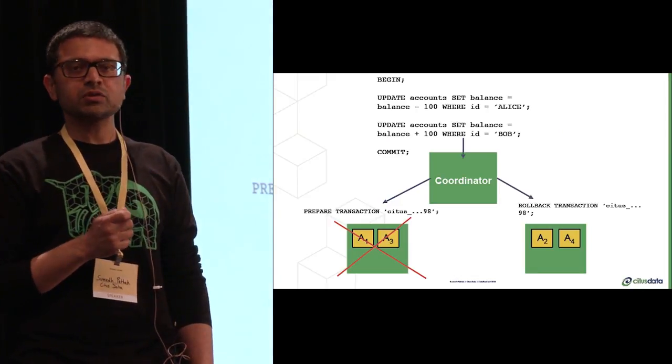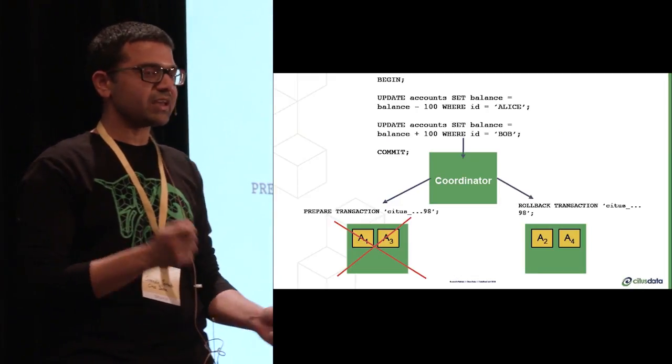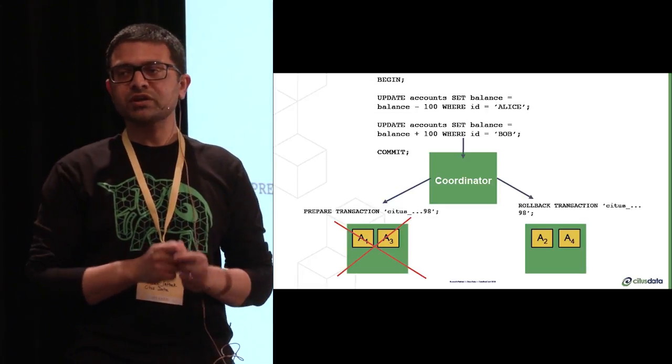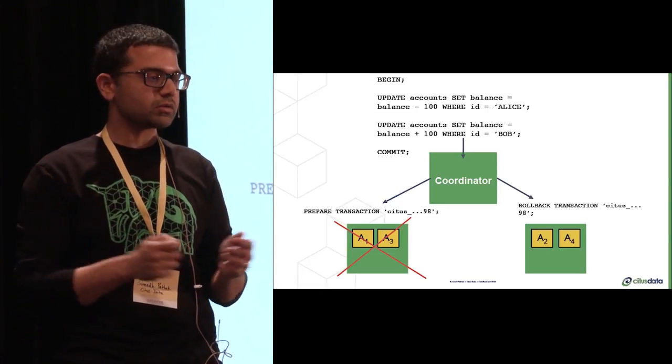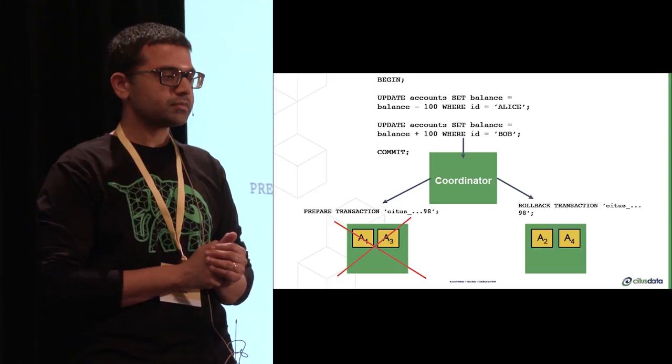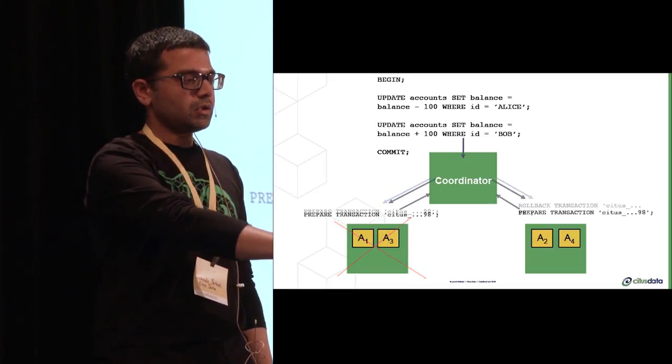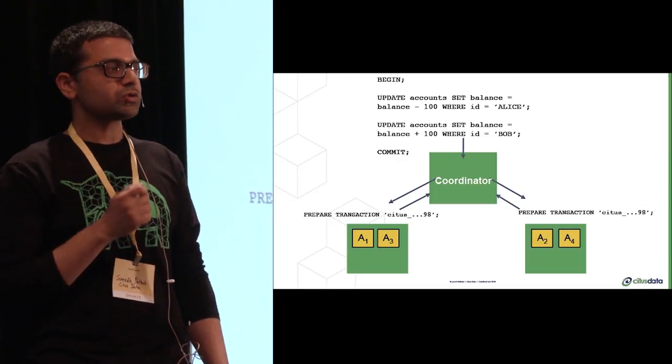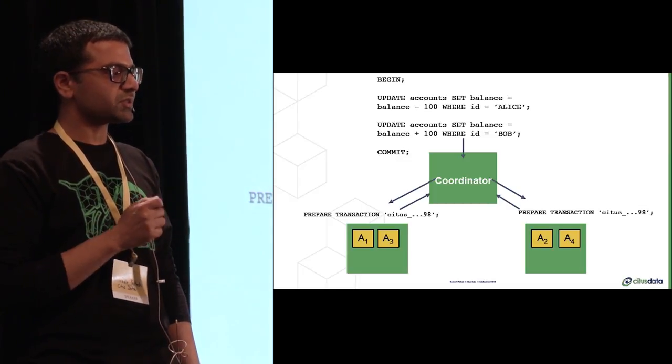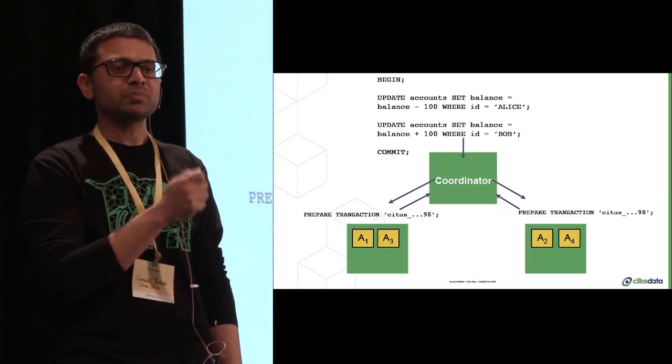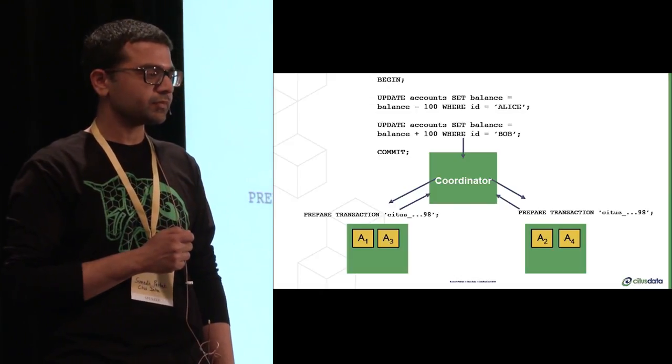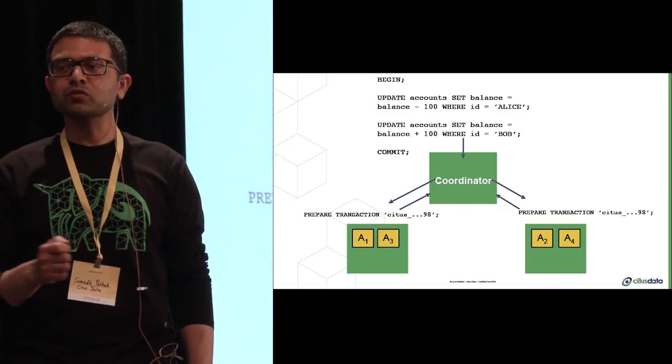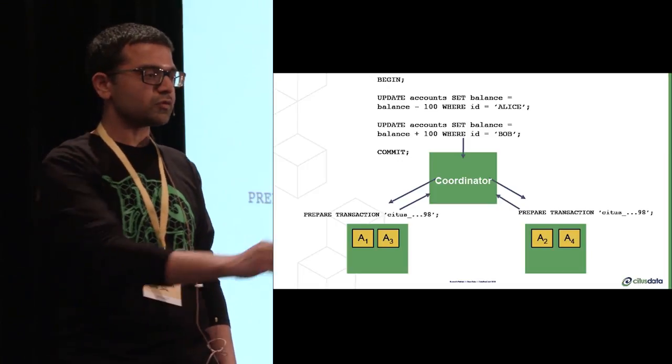And what happens if a node fails during the prepare phase? Well, we haven't committed the transaction anywhere, so we can just issue rollbacks and go back to where we were. But in order to progress to the next phase, the coordinator has to make sure that it gets back a prepare success from every node. And that means doing those two things that we talked about. Only after this can the coordinator move on to the next phase of the two-phase commit.